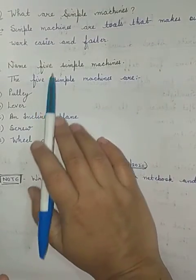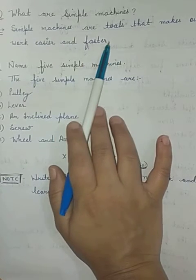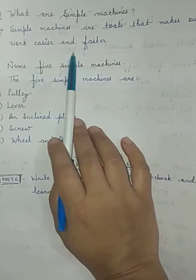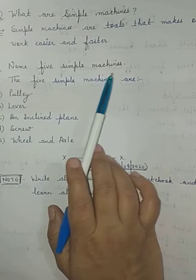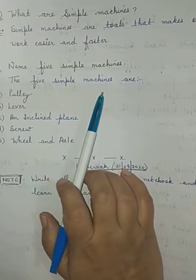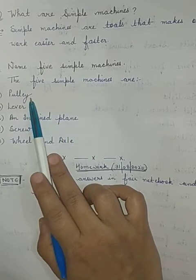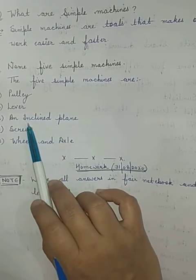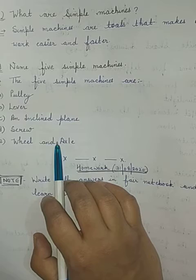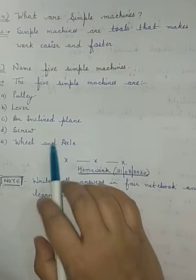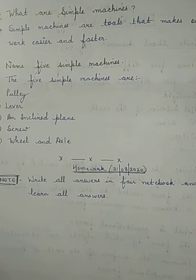The fourth question is: What are simple machines? Simple machines are basically tools which make our work easier and faster. The next question is: Name five simple machines. Five simple machines are pulley, lever, inclined plane, screw, and wheel and axle. In the next video, I will tell you about the long answer questions. Thank you and have a nice day.